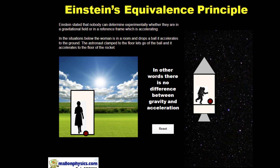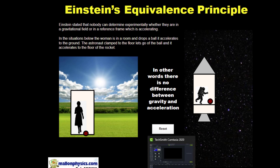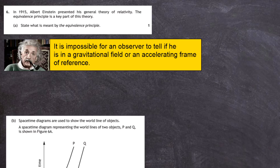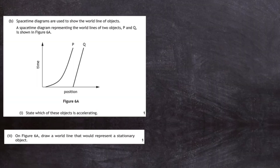In other words, there is no difference between something in a gravitational field and a frame of reference which is accelerating — there's no difference between gravity and acceleration. That really is the equivalence principle, which is an amazing thought from Albert Einstein. For one mark, you just have to learn that it is impossible for an observer to tell if he or she is in a gravitational field or an accelerating frame of reference.